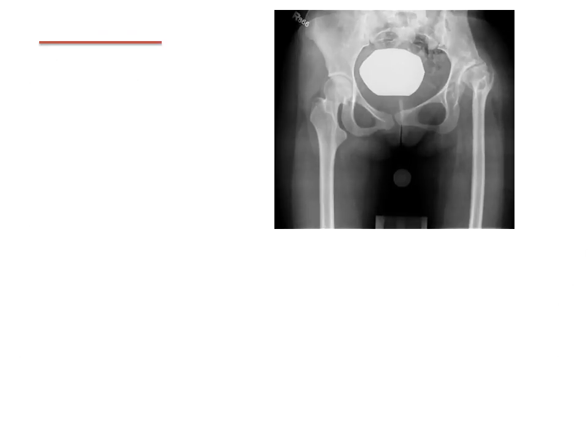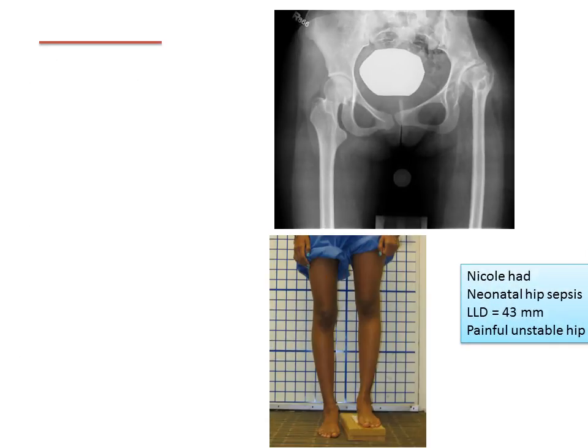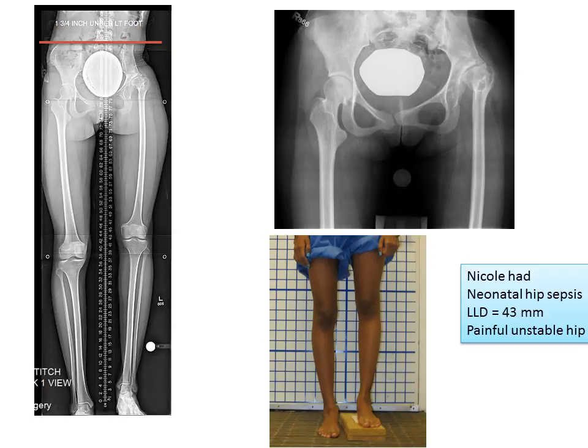I'd like to show you another example that's a little bit different. Nicole had a leg length discrepancy of 43 millimeters with a painful, unstable left hip from neonatal hip sepsis. This is her standing with the blocks. In this case, there's not much contracture, but part of the shortening is from the proximal migration of the hip, and part of the shortening is from the actual shortening of the leg.